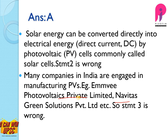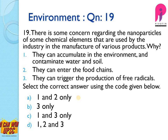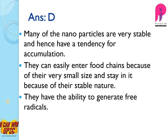Question 19: There is some concern regarding the nanoparticles of some chemical elements — why? They can accumulate in the environment and contaminate water and soil — yes, correct. They can enter the food chains — yes. They can trigger the production of free radicals — yes. All three are correct, so the answer is D — 1, 2, and 3. Many nanoparticles are very stable and have a tendency for accumulation.